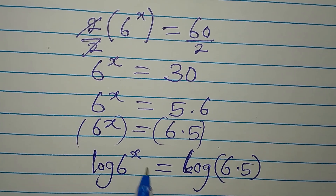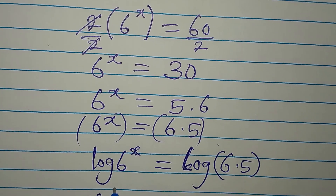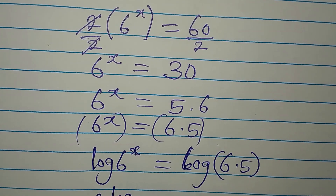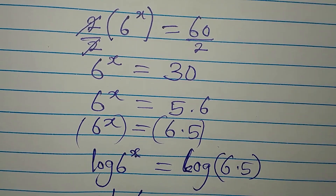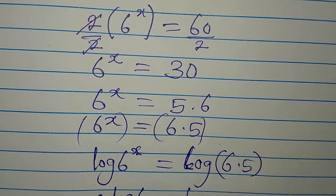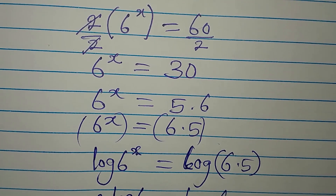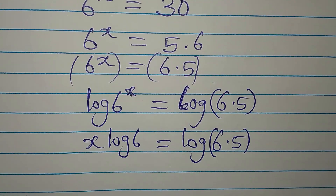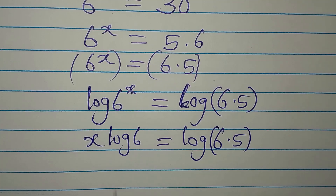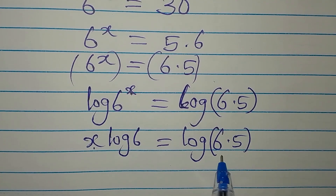Now the x comes down in front: we have x·log 6 equals log of 6 times 5. The x went behind the log and this came down.